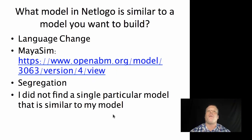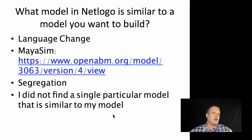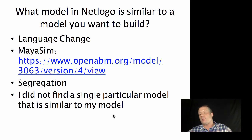The last question we asked was what model in NetLogo is similar to a model that you want to build. Two of the answers were interesting: the language change model, which tries to model how language changes over time and how different groups have influence on that; and the segregation model, which we've talked about quite a bit in this class. Another one that came up in a couple of answers was the Maya sim model, which I had never heard of before, so I went to OpenABM to check it out myself. It's apparently a model of the Mayan civilization and how it evolves over time. A large percentage of you said that you simply didn't find a single particular model that was similar — maybe you found multiple ones or you want features from several. That's all fine.